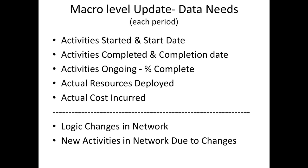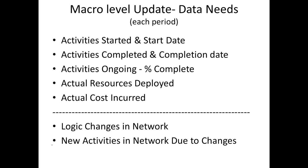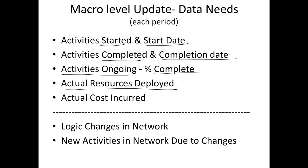Coming back to the macro schedule — not the DPR, but at the macro or network level — remember we have things like early start, early finish, late start, and late finish from our network planning. To update at this level, we want to know: activities which started and their start date, activities completed and their completion date, ongoing activities and their percentage complete, resources deployed versus resources planned, and actual cost incurred. All of this data is needed to monitor the progress of the project from the macro perspective.